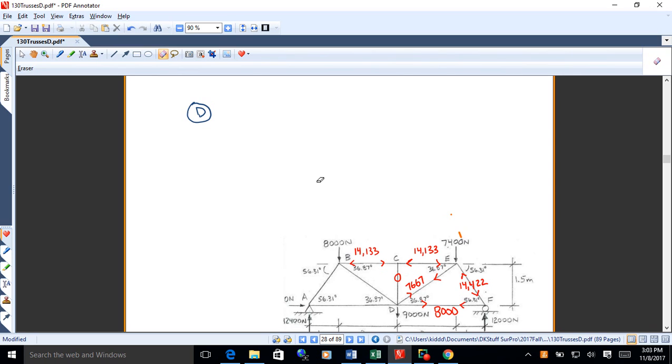So the first thing to do there would be to draw a free body diagram of D and show all those forces on there. Be sure to include the 9,000 Newton force at D. And you'll just have to assume directions on the forces BD and AD. So why don't you go ahead and do that. And you can just pause the recording while you do that and start it up again after you have a free body diagram.